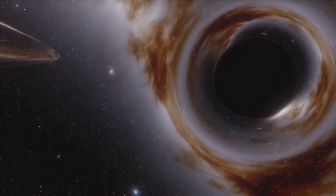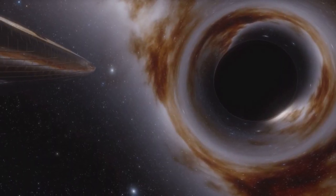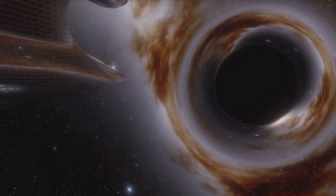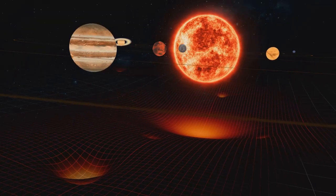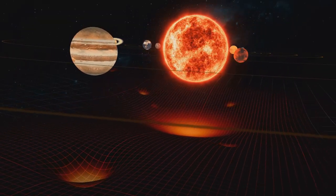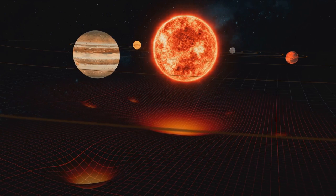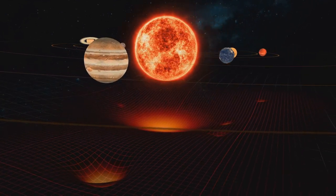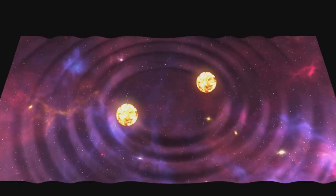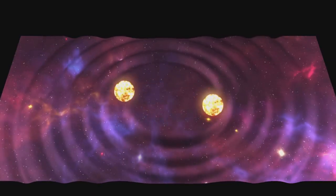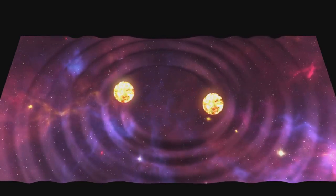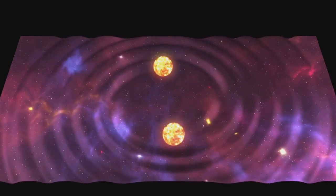In the early 20th century, Albert Einstein revolutionized our understanding of gravity. His theory of general relativity described gravity not as a force, but as a consequence of the warping of space-time by mass and energy. Among the many startling predictions of this theory was the existence of gravitational waves. These waves, much like ripples spreading out when a stone is thrown into a pond, are disturbances in the curvature of space-time caused by the movements of massive objects.